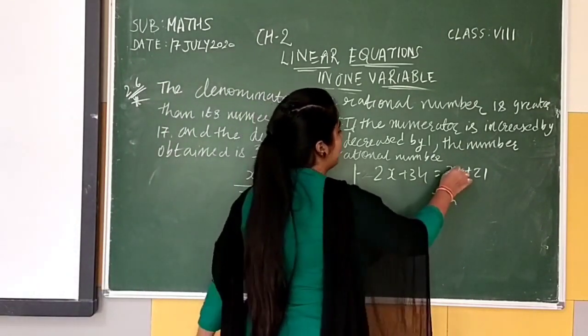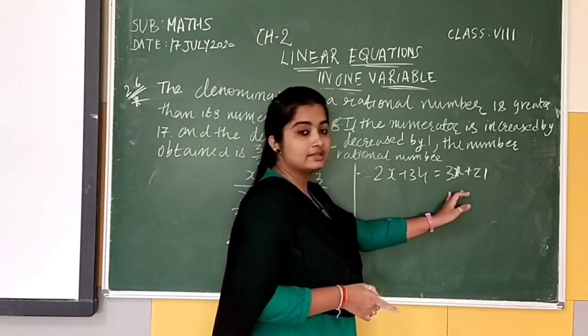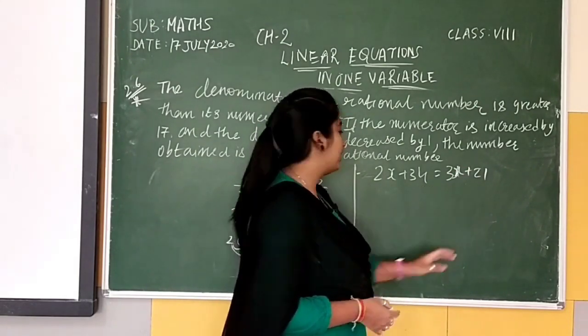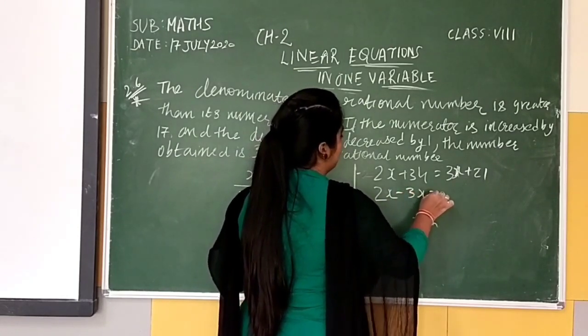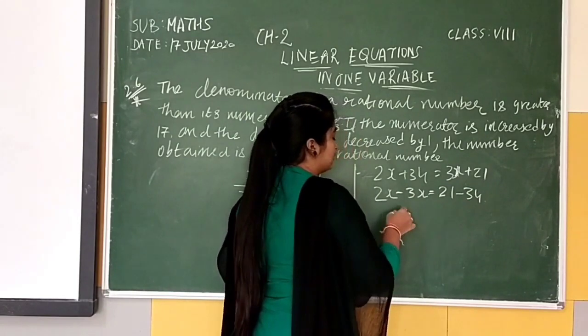Toh yaha pe ab hum X wale form, X wale jo variable hai usko saath meh likhenge aur jo hummehra number hai usko saath meh likhenge. Toh uske liye mujhe kya karna padega? 2X minus 3X equal to 21 minus 34.